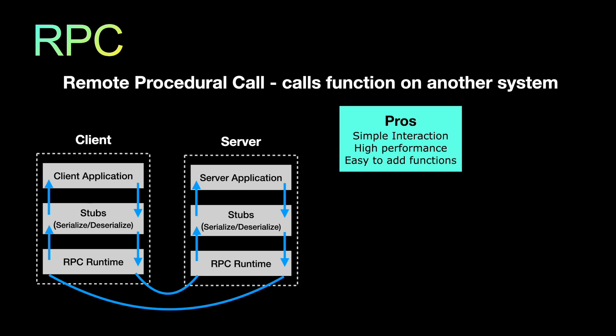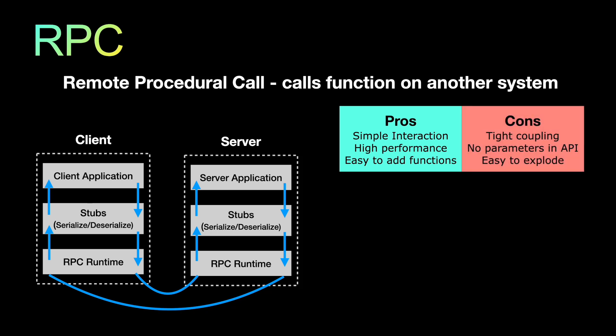The pros of RPC are that it is very simple to interact with when you already know the function. It is high performance because it is not very heavy on the payload, and it is easy to add functions for new feature requirements. However, there are cons: it is very tightly coupled between client and server because it depends on the exact function definition. There are no query parameters in the API like other API standards support, and it can easily explode if not reviewed well.